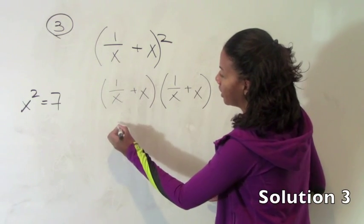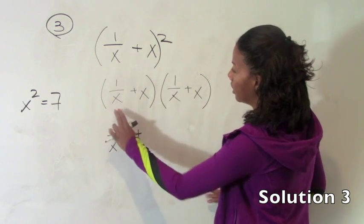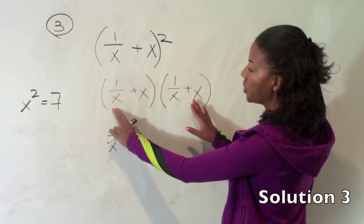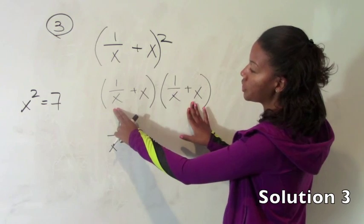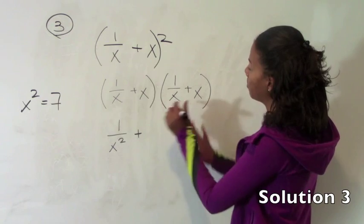So 1 over x times 1 over x is indeed 1 over x squared plus your outside terms. Notice that these two terms are reciprocals of one another. A number times its reciprocal is always 1.